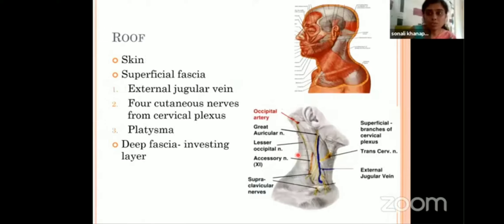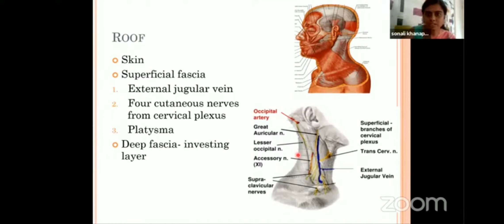Coming to the roof — and this is for all triangles — the roof is almost always formed by skin, superficial fascia and deep fascia. If you remember, in this order only you have dissected the triangles to reach the content. The superficial fascia contains fat, and it also contains the vessels and nerves that are going to supply the overlying skin.